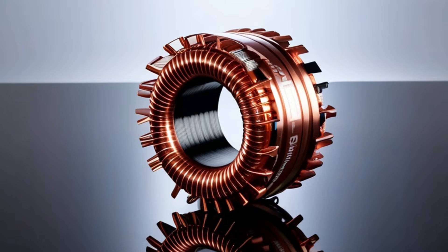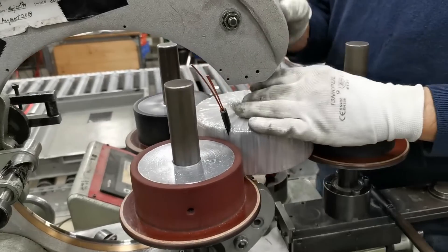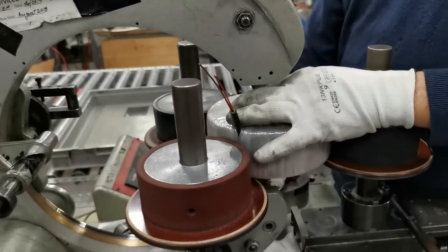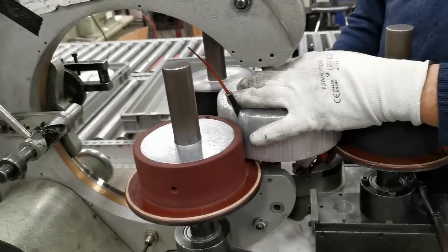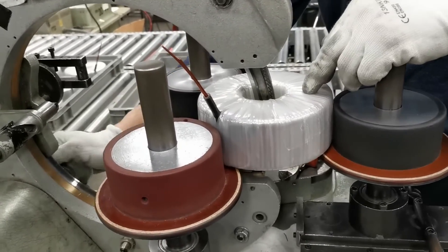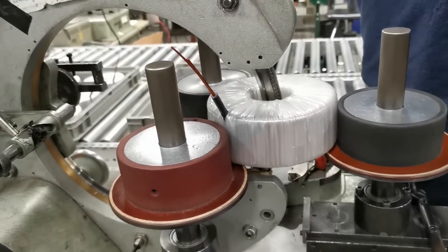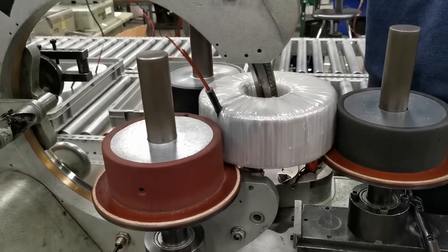To sum up, a toroidal transformer consists of a toroidal core, primary and secondary windings, and a protective casing. Each component plays a vital role in the transformer's operation and efficiency. Now that we know the structure, we can proceed to understand how it works.